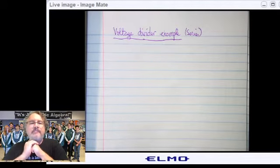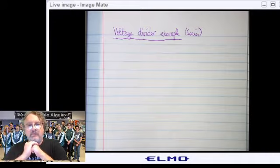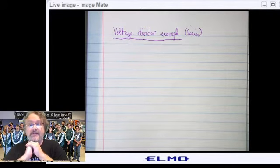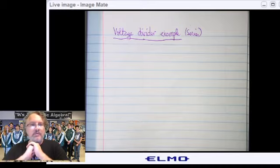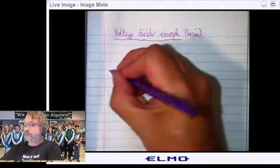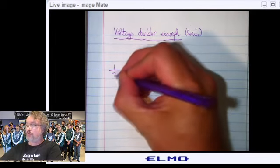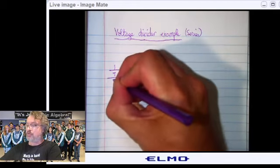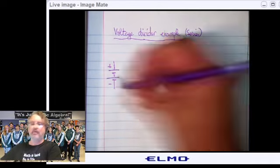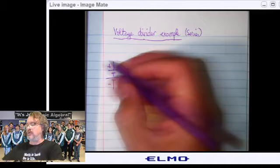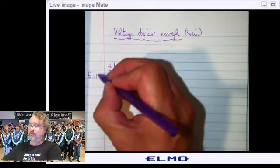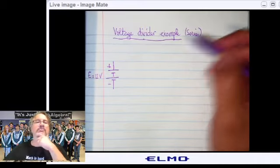This example video on a voltage divider will illustrate what you can do with a simple series circuit. Imagine the following situation. You have a battery. So here I'm going to draw it as a two-cell battery. And this battery is a 12V battery. E is equal to 12V.